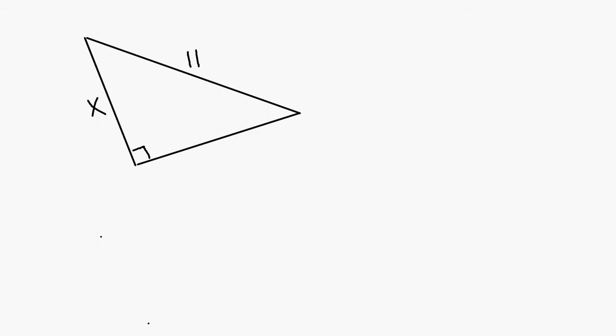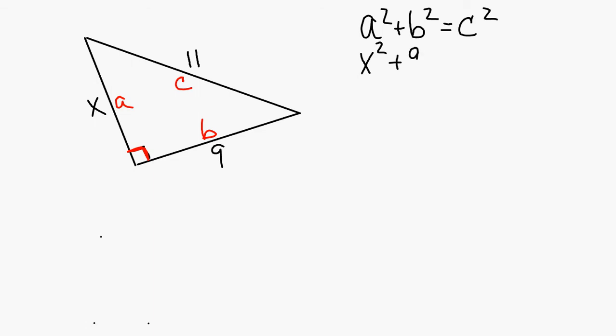Another right triangle — we're finding the missing side. Step one, label the sides. The sides that make up the 90-degree angle are A and B. The side opposite the 90-degree angle, or the hypotenuse, is side C. The Pythagorean theorem is A squared plus B squared equals C squared. Now substitute: the A in this case is X, what you're trying to find. So X squared plus 9 squared equals 11 squared, where C equals 11. Square everything: X squared plus 81 equals 121.